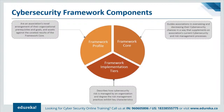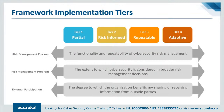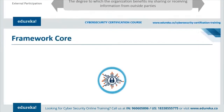The tiers describe the degree to which an organization's cybersecurity risk management practices exhibit the characteristics defined in the framework. The tiers range from Partial (Tier 1) to Adaptive (Tier 4), describing an increasing degree of rigor, how well cybersecurity risk decisions are integrated into broader risk decisions, and the degree to which an organization shares and receives cybersecurity information from external parties. Tiers do not necessarily represent maturity levels. Organizations should determine the desired tier ensuring it meets organizational goals, reduces cybersecurity risks to an acceptable level, and is feasible to implement.